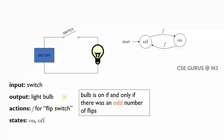In the starting mode, initially it will be in off state. When I give one flip — closing the circuit — the bulb will be in on mode. From on mode, if I give the next flip — opening it — the bulb will be in off mode. Then again flip: on mode; again flip: off mode. Like this it happens, and I can represent this circuit.